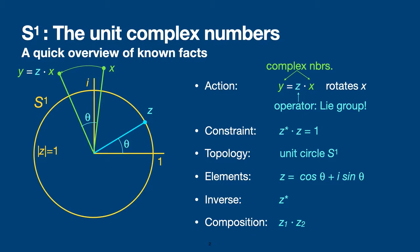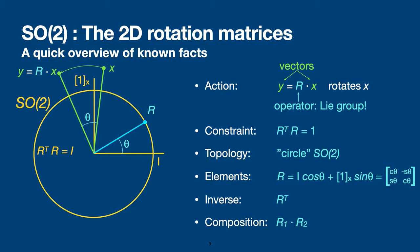You can also compose different operators by using the complex product. These topics are classic topics of Lie groups, and if I now switch to another Lie group — the 2D rotation matrices — you will immediately notice that everything I explained for complex numbers is applicable here too.